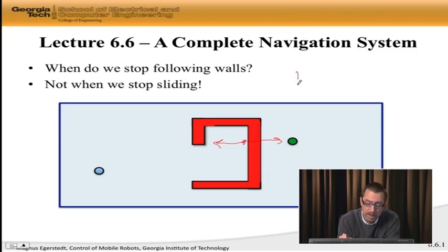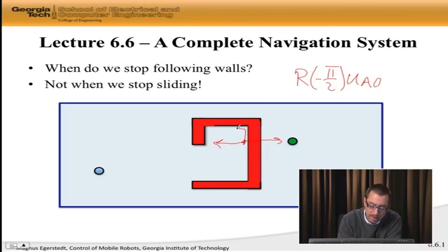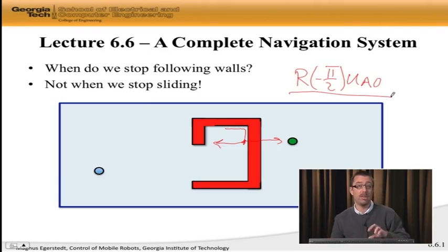If I'm instead using, in this case, r negative pi over 2 times u avoid obstacle, then that's just going to keep me going in a clockwise manner. So that's why this is the better behavior to use, even though sliding is useful to know which direction to start in.